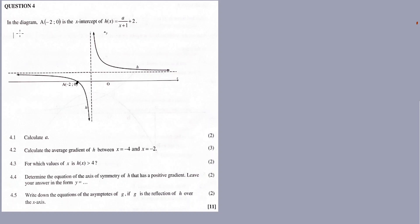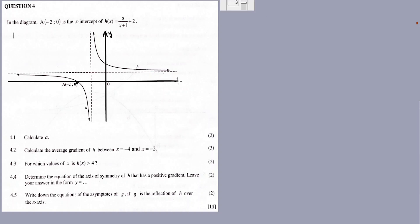I heard complaints about this question paper — errors — this could be one of them. So I'm going to draw it. This is the y-axis. This is the x-axis. The dotted lines are my asymptotes. Now H — the H function — like 4.1, we need to find or calculate the value of A.